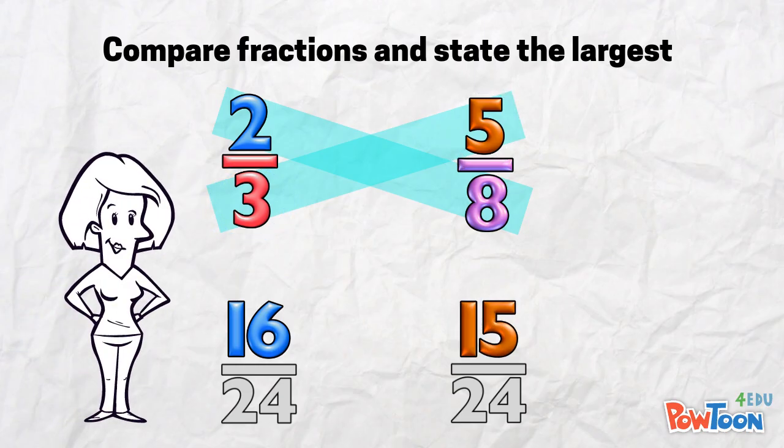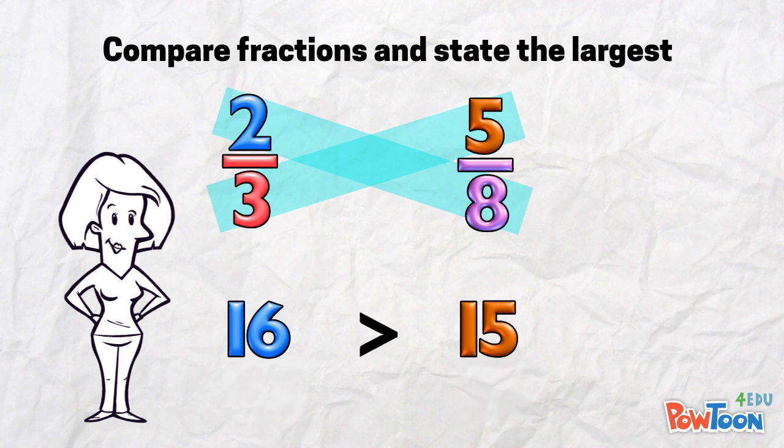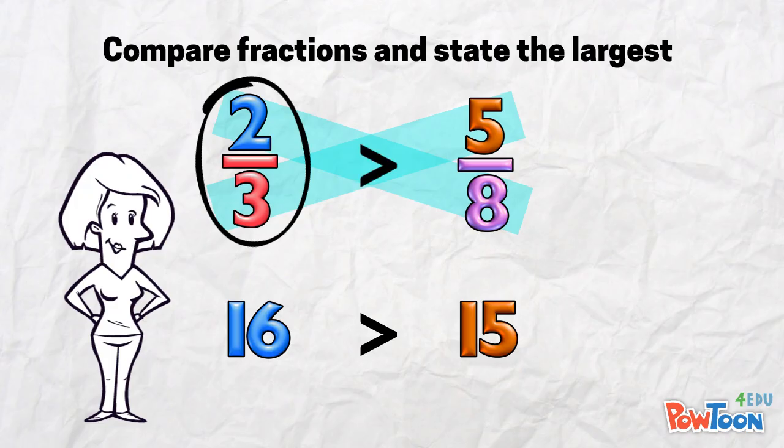We can instantly see the size difference thanks to our equivalent fraction numerators. 16 is greater than 15, so 2 thirds is greater than 5 eighths.